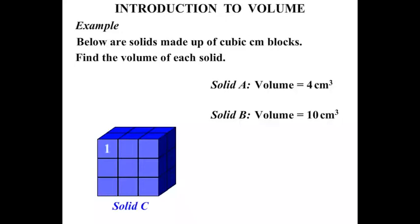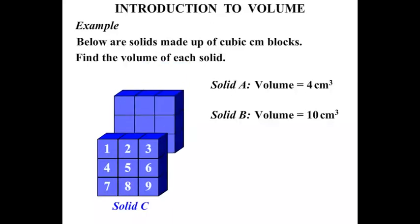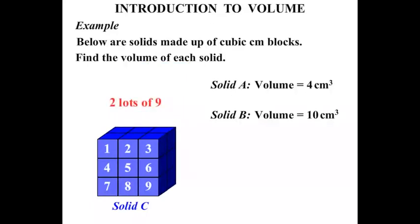1, 2, 3, 4, 5, 6, 7, 8, 9. So that has 9 cm³ frontage. Notice that at the back, that would also have 9 cm³. So in other words, we've got 2 lots of 9. And 2 times 9 is 18. So solid C has a volume equal to 18 cm³.